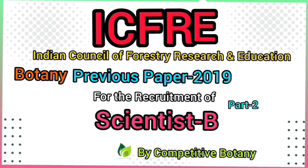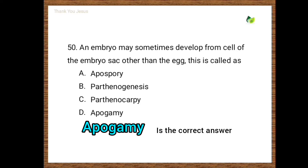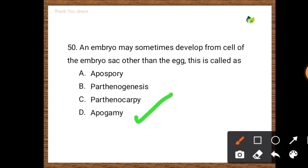First question: An embryo may sometimes develop from the cell of the embryo sac other than the egg. This is called as — options are apospory, parthenogenesis, parthenocarpy, parthenogamy. The correct option is the fourth one, that is parthenogamy.